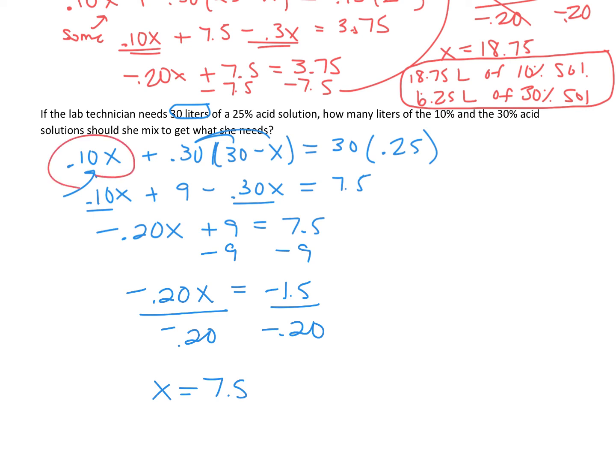Remember that x is how many liters of the 10% solution she's going to use, so she needs 7.5 liters of the 10% solution. And the rest of it, the rest of it is 30 minus 7.5, she needs 22.5 liters of the stronger 30% solution. Awesome! Does yours look as good as mine? You guys should be proud of that.